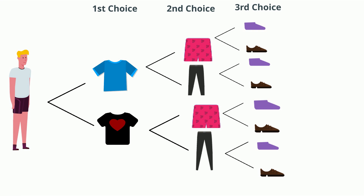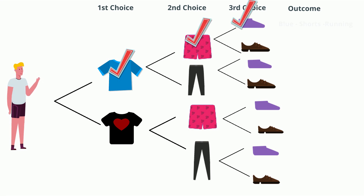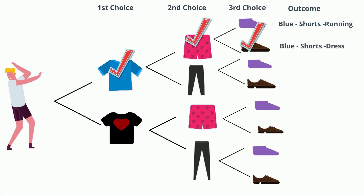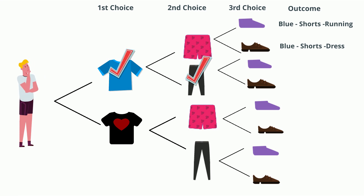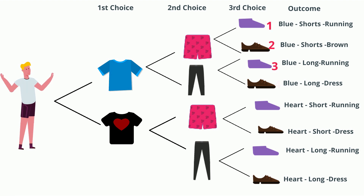Now let's see what it tells you. First, we can figure out the total number of outcomes, and there are two ways we can do this. First, we can just count the total number of outcomes. We have: blue shirt, short pants, and purple running shoes; or blue shirt, short pants, and dress shoes; or blue shirt, long pants, and purple running shoes; and here's the rest. The total number of outcomes — let's count: 1, 2, 3, 4, 5, 6, 7, 8 choices.